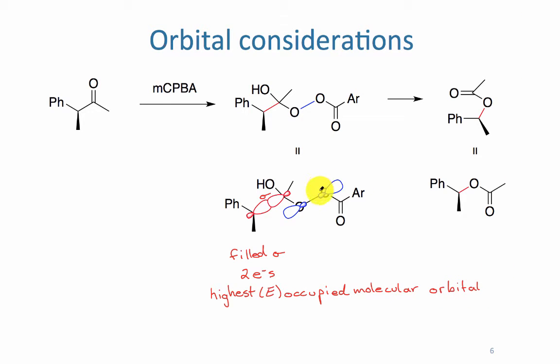Over on the oxygen-oxygen side, what we need now is an empty orbital for those two electrons to go into. Electrons will always go into empty orbitals.